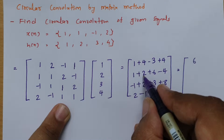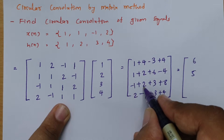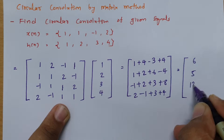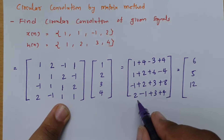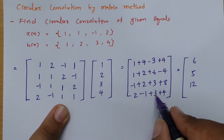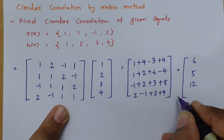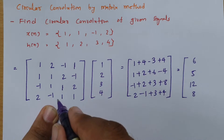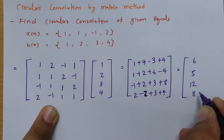Second row sum: 1 plus 2 is 3, plus 6 is 9, minus 4 gives 5. Third row: minus 1 plus 2 is 1, plus 3 is 4, plus 8 gives 12. Fourth row: 2 minus 1 is 1, plus 3 is 4, plus 4 gives 8. But wait — minus 1 times 2 should be minus 2, so correcting that value gives 7.